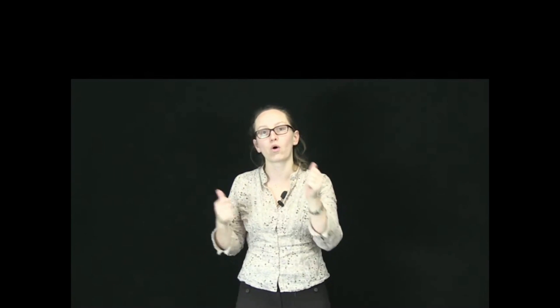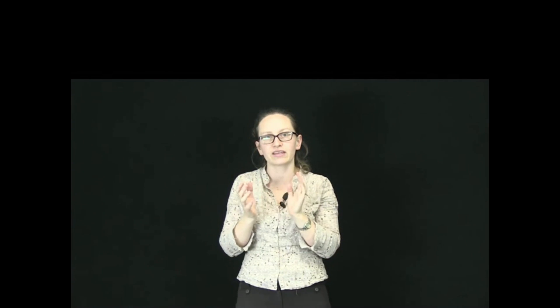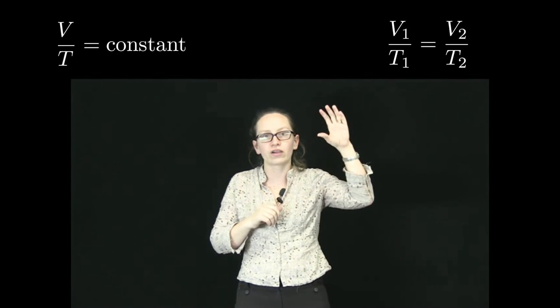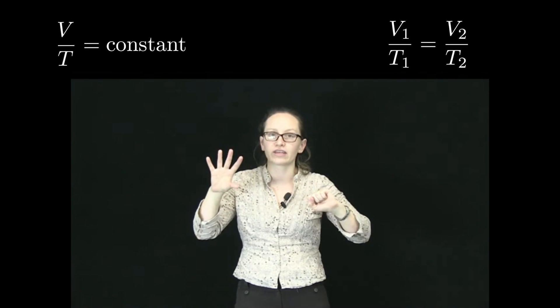To get the hydrogen into the balloon, Charles discovered that if he cooled it down a lot with water, he could actually get a lot more hydrogen into the balloon. This led to what's now known as Charles' Law. Charles' Law says that there's a relationship between the volume and the temperature. It can be written as volume on temperature is constant, or V1 on T1 is equal to V2 on T2.